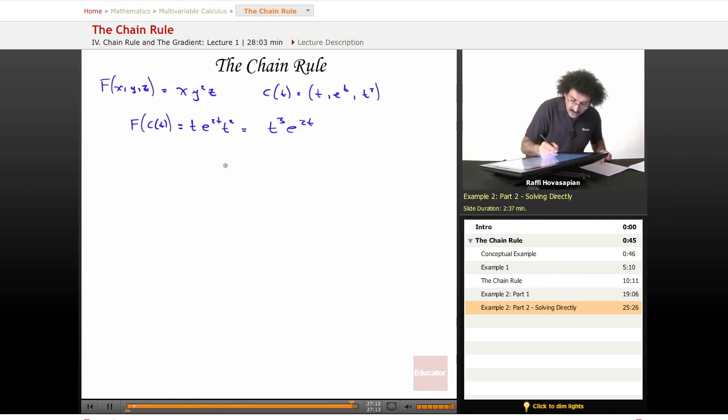Well, now if I just take, this is just a function of t. So now if I just take df with respect to t, I end up getting, so it's going to be this times the derivative of that, which is going to be 2t^3·e^(2t) plus that times the derivative of that, 3t^2·e^(2t). What do you know? You end up with the same exact answer.